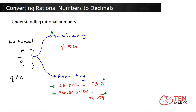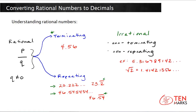Now, there are other numbers that are non-terminating but have no repeating pattern, and these are irrational. An example of an irrational number is 5.316789142, dot dot dot. This would continue for an infinite number of decimal places with no repeating pattern, and this is why it's irrational.